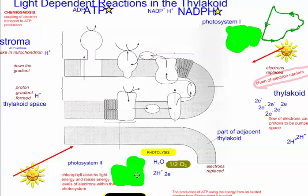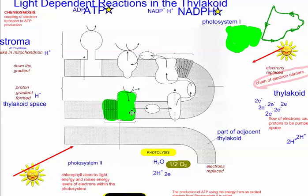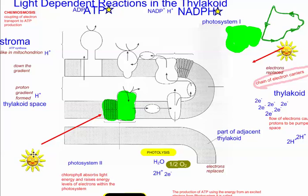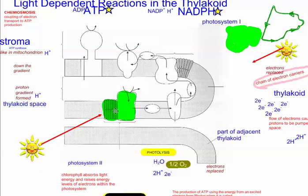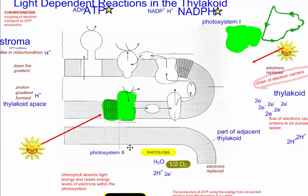Let's remind ourselves what's going on here. Chlorophyll is our main photosynthetic pigment, and it's going to get excited by light energy. We're going to call this first piece of chlorophyll Photosystem 2, so think of it as PS2.